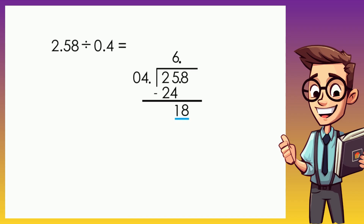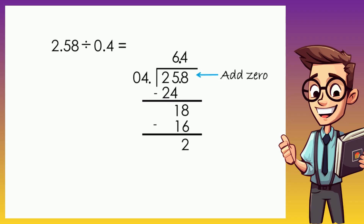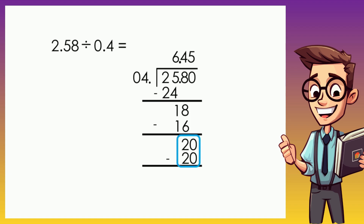Think of a number that when multiplied by 4 gives a result closer or equal to 18. That number is 4, because 4 times 4 is 16. So 18 minus 16 is 2. Our goal is to make the remainder 0, so we must continue. We add 0 — that won't change the value. Bring down the 0, making it 20. The number that multiplied by 4 gives 20 is 5, because 5 times 4 is 20. Subtracting gives 0 remainder, so the final answer is 6.45.